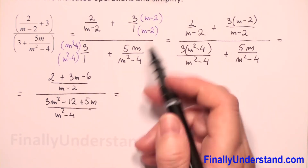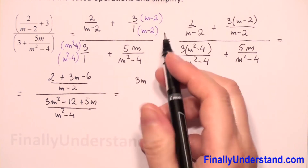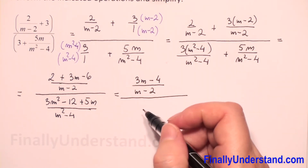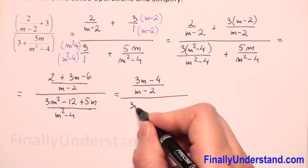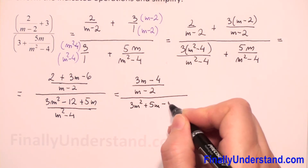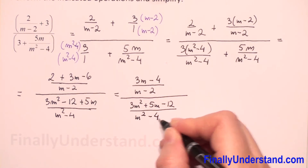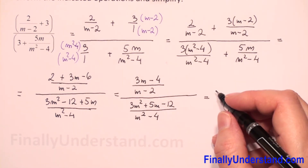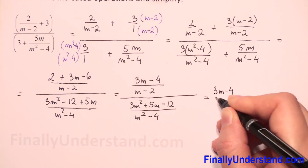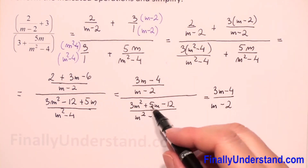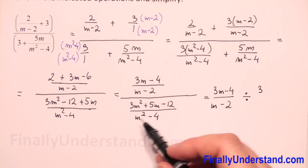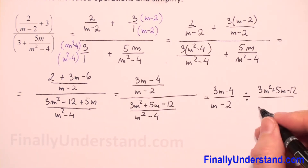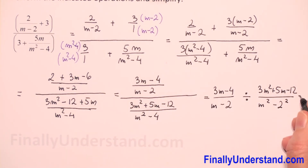We can put first 3m in the numerator, and 2 plus negative 6 is negative 4, over (m minus 2). In the numerator we will put first the expression with the highest power: m squared, next will be plus 5m minus 12, over (m squared minus 4). Now I will change this fraction bar to a division sign, because the fraction bar means division. So we will have (3m minus 4) over (m minus 2) divided by (3m squared plus 5m minus 12) over (m squared minus 4).